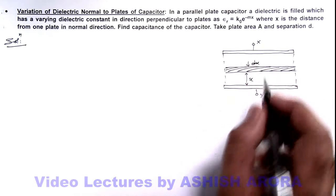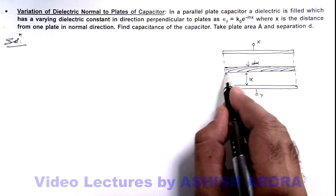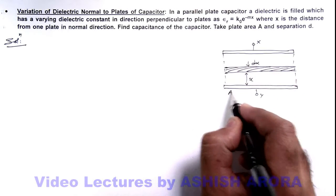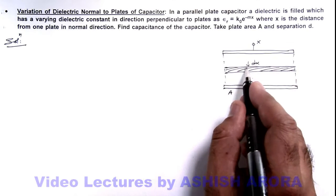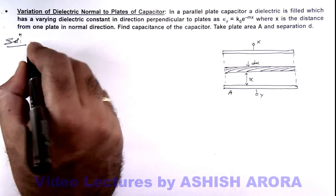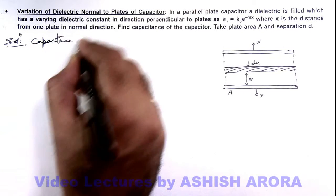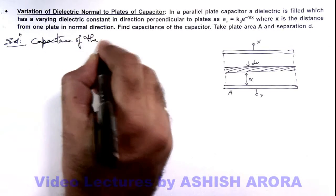Here you can see, this dx can be considered as a capacitor having plate area equal to the area of plate A and the separation between the plates to be dx. So here we can write the capacitance of the element.